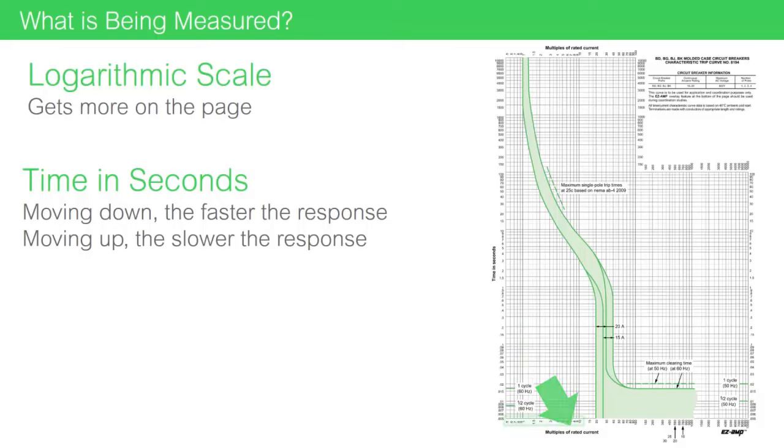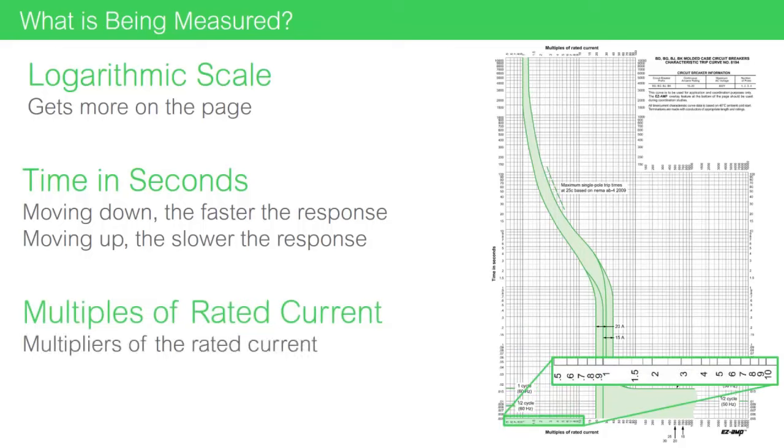The horizontal axis is reporting multiples of rated current. Notice these numbers are not amps, but multiples of the circuit breaker's rated amperage.